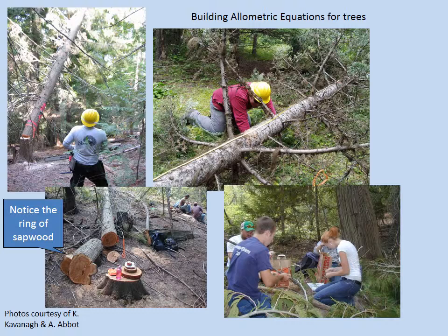Moisture content is used to convert total fresh weight from the field into dry weight. The dry weight of each tissue scales with tree diameter, so it's possible to plot a tree's dry mass for each tissue against its diameter. By dissecting only a few trees, it's possible to build a very close allometric relationship that allows us to predict tree biomass based on stem diameter.